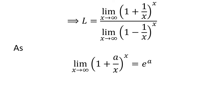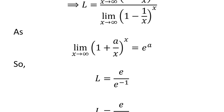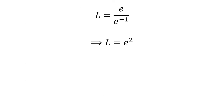We know the limit of 1 plus 1 upon x raised to the power of x as x approaches infinity is equal to exponential of a. Application of the above identity gives us L is equal to exponential upon exponential of minus 1. Further simplification gives us L is equal to exponential of 2.